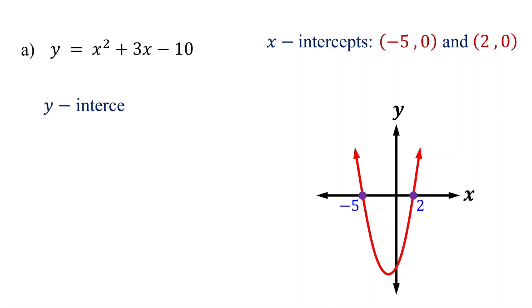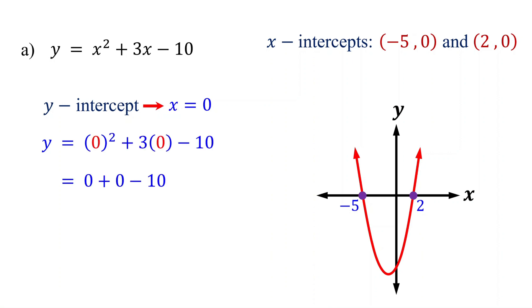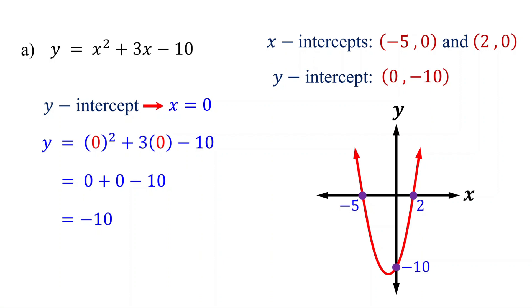The y-intercept is the point on the parabola where x equals 0. So we set x to 0 and solve for y. This simplifies to negative 10. Therefore, the y-intercept of the parabola is the point (0, negative 10). It crosses the y-axis at this point.